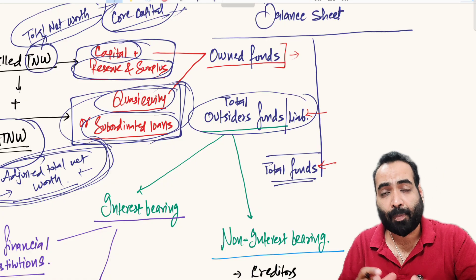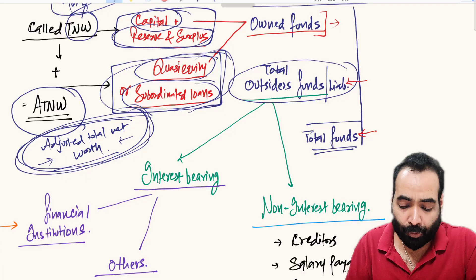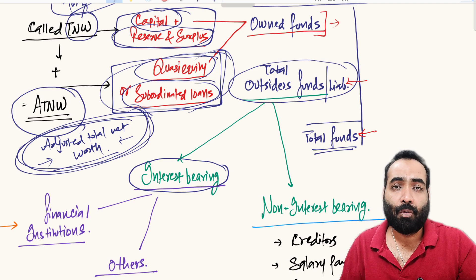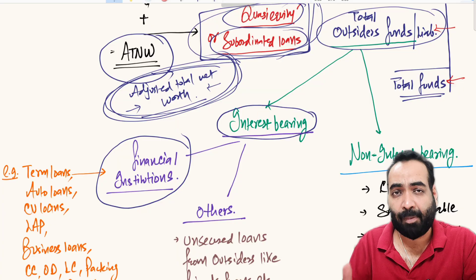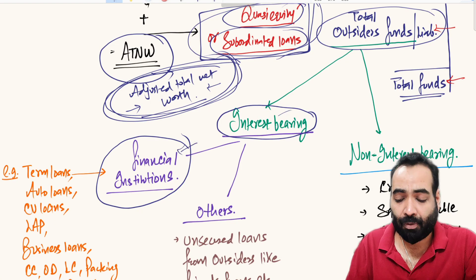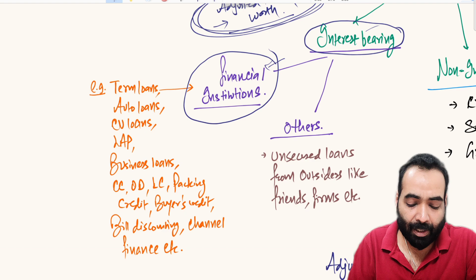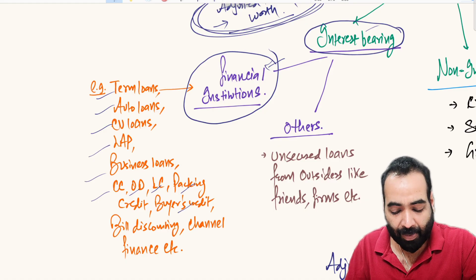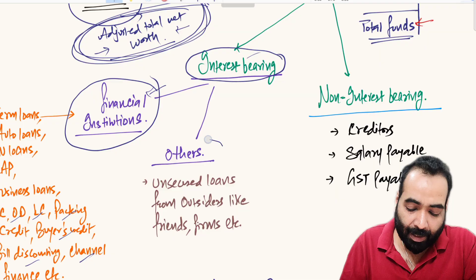Now, outsiders' funds — money taken from parties other than promoters — are divided into two parts. The first is interest-bearing funds: outsiders who receive interest on funds given to the borrower. The prime examples are financial institutions, banks, and NBFCs. Whatever they lend, they charge interest or commission. They provide term loans, auto loans, commercial vehicle loans, loans against property, business loans, cash credit, overdraft, letter of credit, packing credit, buyer's credit, bank guarantees, bill discounting, and channel finance.